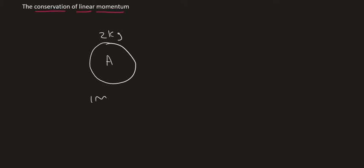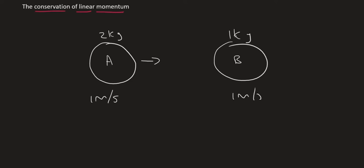and it's moving at 1 meter per second to the right. Object B is a 1 kilogram object moving at 1 meter per second to the left. So let's quickly calculate the total momentum of the entire system.